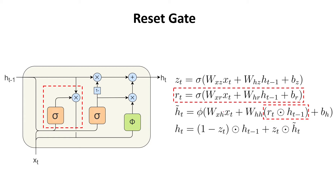The first gate is the reset gate, which is pretty similar to the forget gate in LSTMs. The reset gate takes as input the representation of the current step and the previous hidden state, multiplies each of them with a corresponding weight matrix, adds a bias, and applies the sigmoid activation function, saving this in the value of Rt — the reset value for the current step.